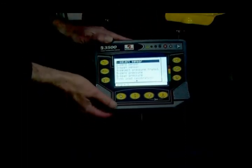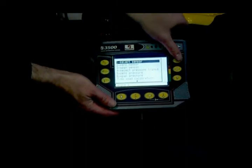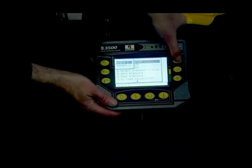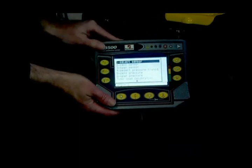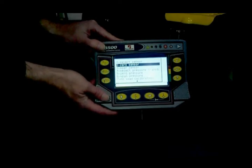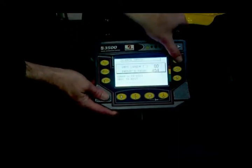So what we're going to do is calibrate the angle. We're going to select sensor, make sure that angle one is highlighted, and hit the check mark. Now it's ready to calibrate the angle sensor. We're going to come down, hit select zero sensor, and hit the check mark.